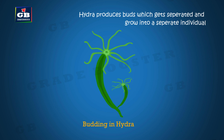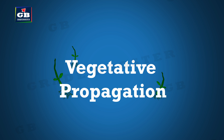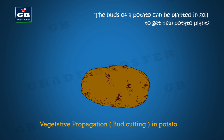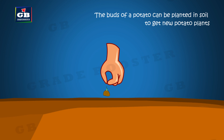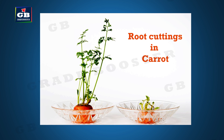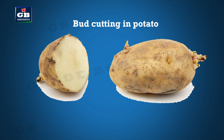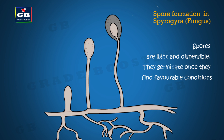Budding: Hydra produces buds on their bodies. These buds get separated and can grow as an individual — this is budding. Vegetative propagation: In many plants, cut body parts can be planted in the soil to get new plants. This is called vegetative propagation. Examples include stem cuttings in roses and sugarcane, root cuttings in carrot, and bud cuttings in potato.